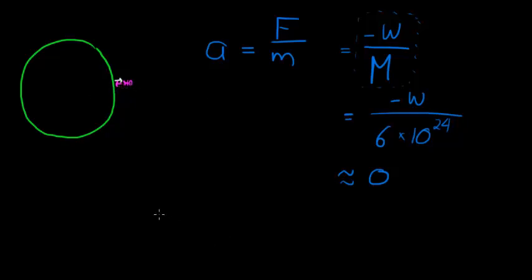However, for the person, it's the opposite way around. For the person, it's the same force—weight—divided by the mass of that person. And on Earth, we know that this always approximates 9.8 meters per second squared.